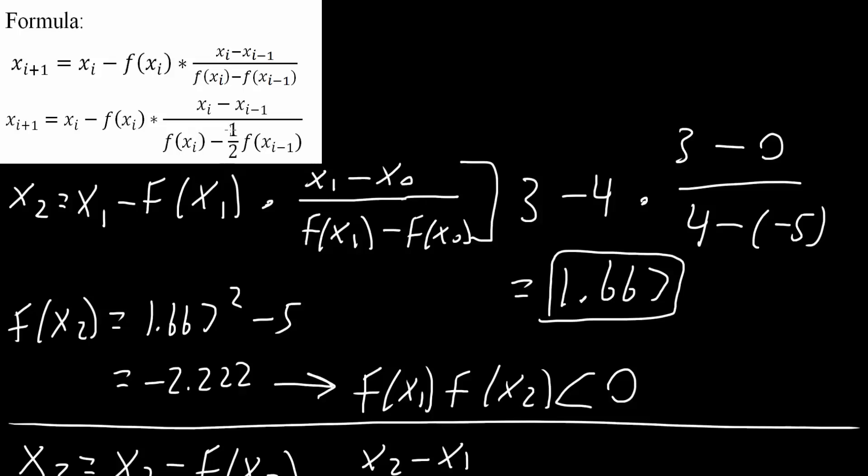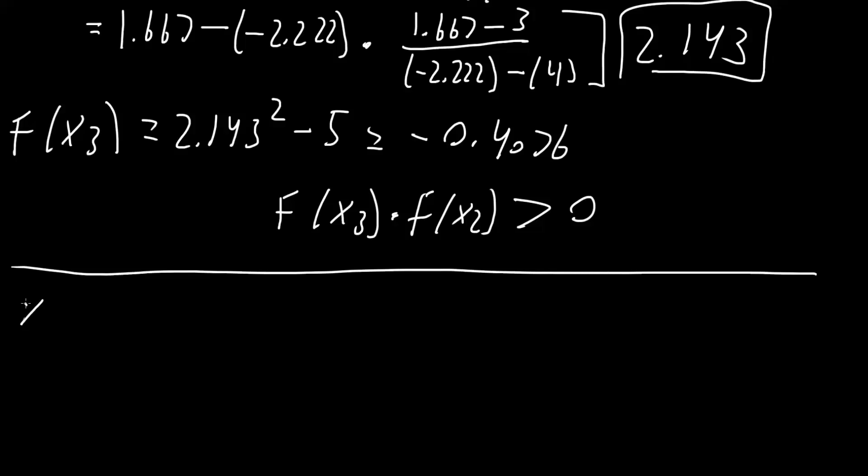So let's do that. So we say x4 is equal to x3 minus f(x3) times x3 minus x2 divided by f(x3), and because this is greater than 0, minus one-half of f(x2). Now we simply plug in what we had based off of this information.